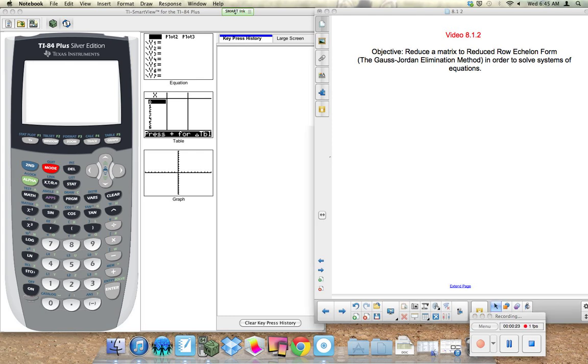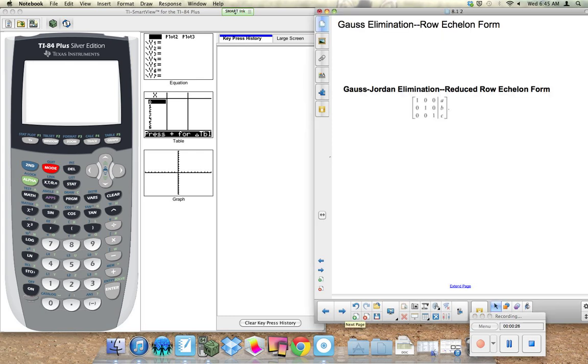Nowadays we have technology to do that for us. So the ultimate goal of this video is to understand how to use our calculator to turn a matrix that we'll write into the following reduced row echelon form. It simply will have ones down the diagonal and then on the opposing side, numbers a, b, and c.